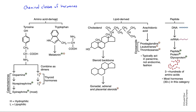We start here on the left. We have the amino acid-derived hormones. There are actually only two different amino acids that are used as precursors. In reality, we could probably focus largely on one of them — that's tyrosine. Tyrosine is an amino acid that can be utilized to produce two different groups of hormones.